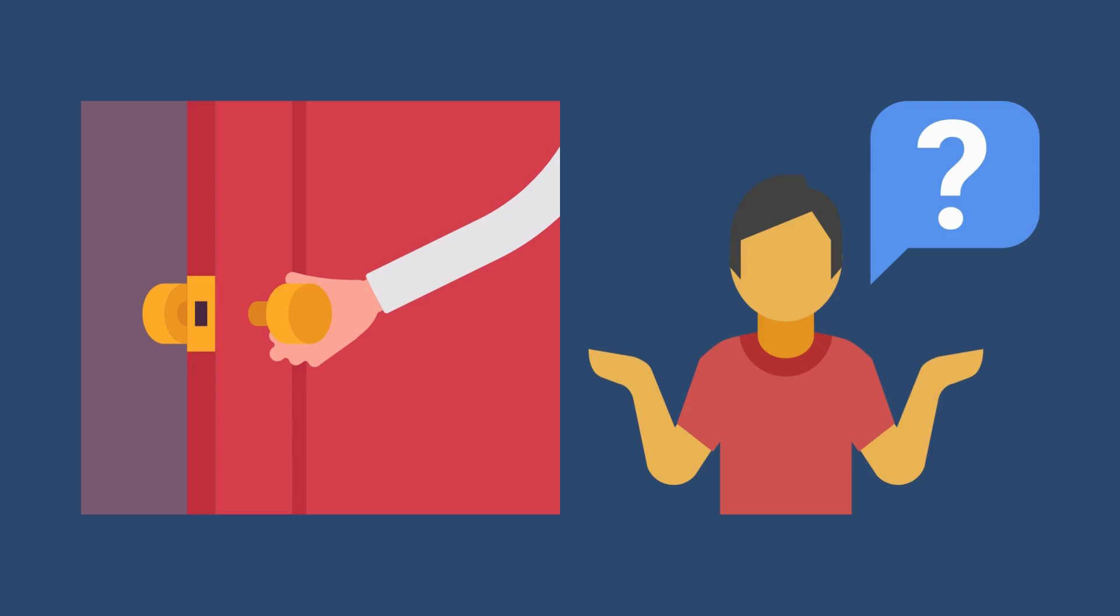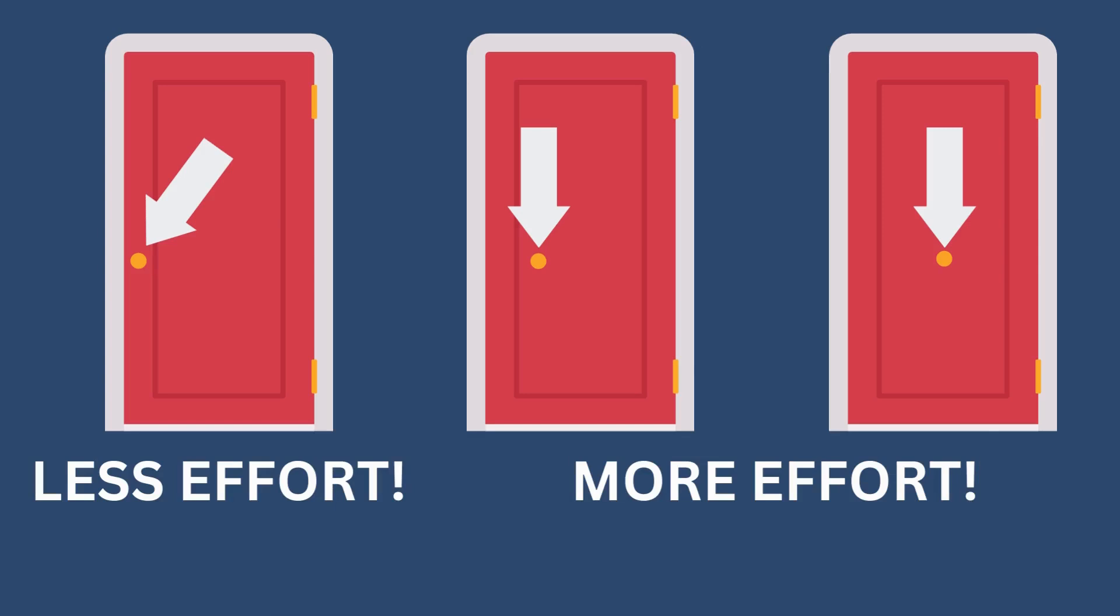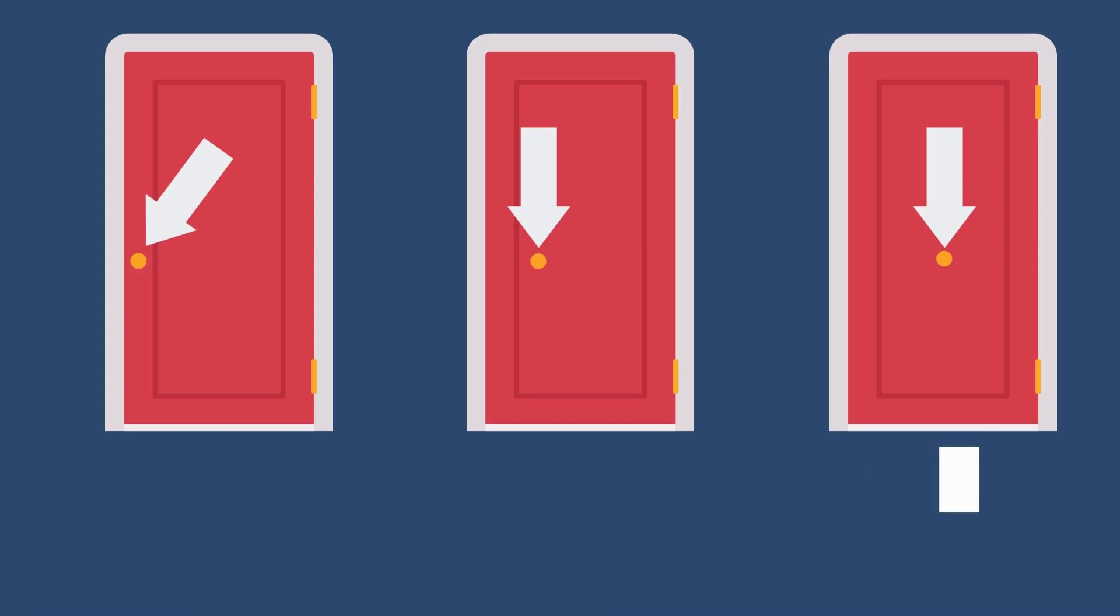The answer is easy. Doorknobs are usually located on the edge of the door to move it with less effort.